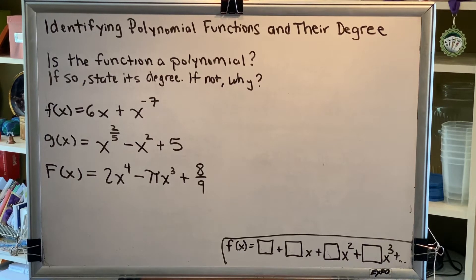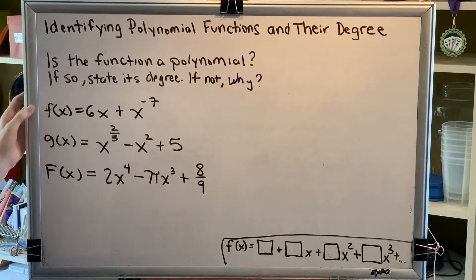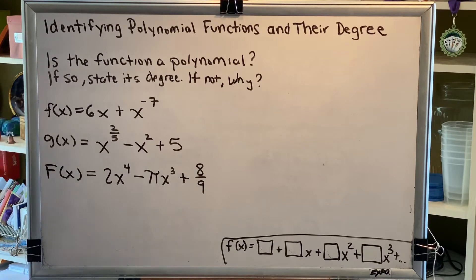The topic of this video is identifying polynomial functions and their degree. Let's go ahead and solve this problem. We have f of x equals 6x plus x to the negative 7.